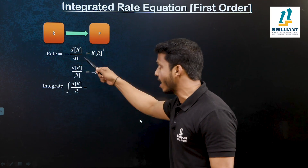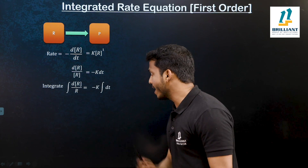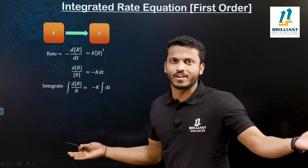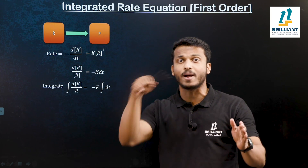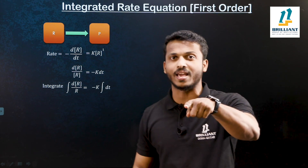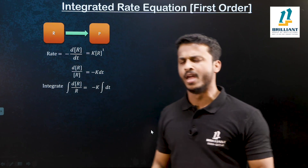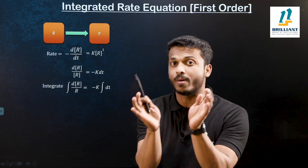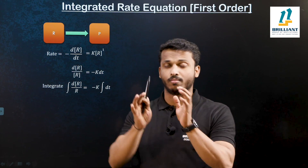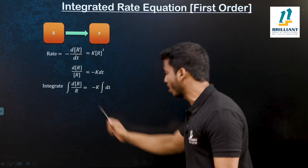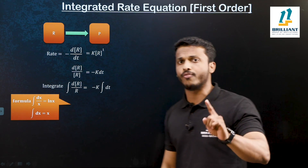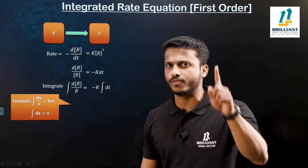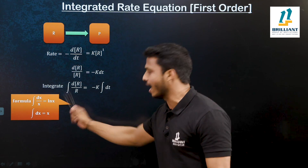Integral of dR by R is equal to minus k into integral of dt. K is a constant, so let me take it outside. In order to do this integration, we need some common equations from integration. Integral of dx by x is equal to ln x. Similarly, integral of dx is equal to x.